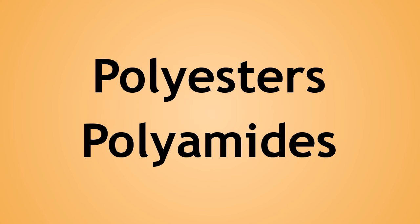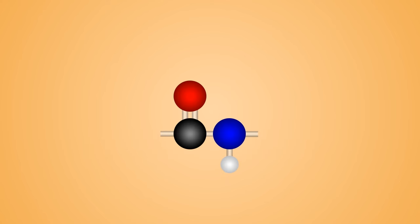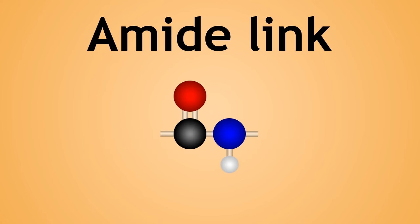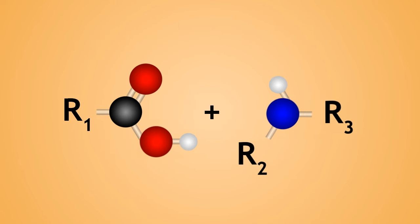Polyesters and polyamides are the two types of condensation polymer we will look at. We'll first look at polyamides. This is known as the amide link. It is formed when a carboxylic acid reacts with an amine.